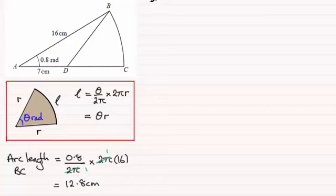Next we need to work out this length here, BD. And we can get that quite easily by looking at the triangle ABD. We've got two sides and the opposite angle, so we can use the cosine rule on this triangle.